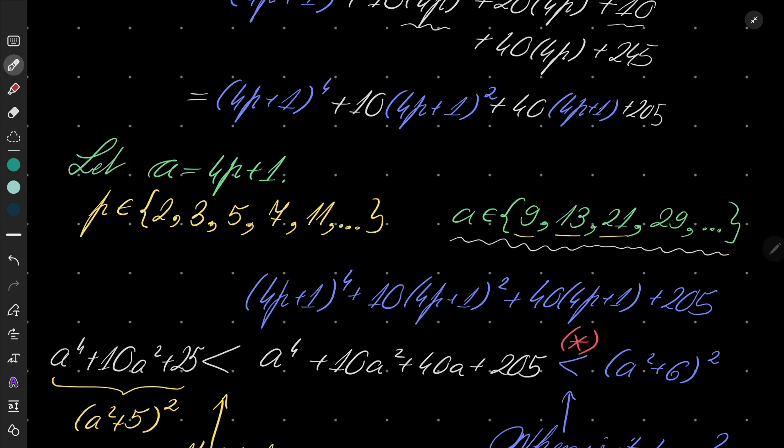If p was allowed to be an arbitrary positive integer, then the only part that changes is that we will have to consider many more cases of a. So for example, we will have to consider a equals 17 or something like that. I leave it to you.